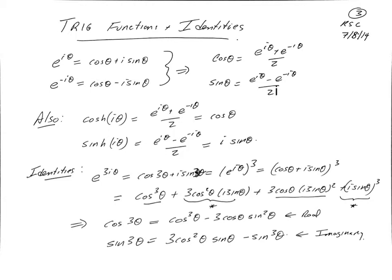Using the definitions of hyperbolic cosine and hyperbolic sine functions, the hyperbolic cosine of anything is e to that thing plus e to the minus that thing over 2. So the hyperbolic cosine of i theta is e to the i theta plus e to the minus i theta over 2, which is just cosine theta. The hyperbolic sine of i theta is e to the i theta minus e to the minus i theta over 2, up to an i — that's just i times sine theta. So all of these functions — trigonometric functions, exponentials, and hyperbolic trigonometric functions — are all related together.